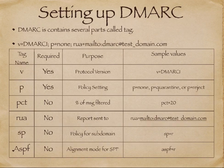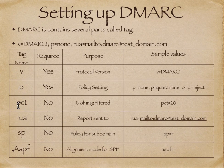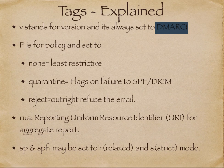The PCT tag specifies the percentage of emails to which the policy should be applied. Initially, apply the policy to a very small percentage of emails, then as confidence in the system grows, keep increasing the percentage until you reach 100%.